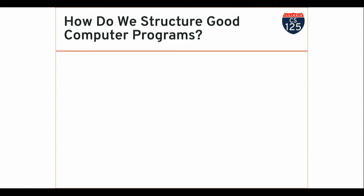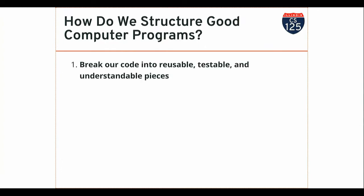Up until this point, the primary way we've had for structuring our programs has been the function — a unit of programmatic logic. That allowed us to take what would otherwise be a big unorganized jumble of code and break it into smaller pieces that accomplish specific tasks, which can then be tested and composed in ways to build up larger programs. Today we're going to start to look at another technique: using Java's object system to combine state and behavior, bringing algorithms closer to the data they work on.